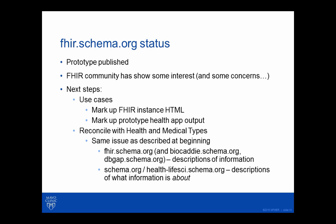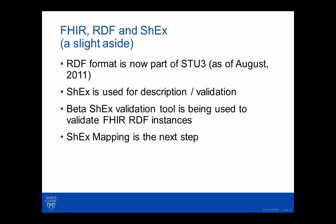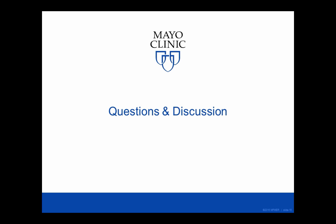We're also looking at reconciling with the health and medical types and with other material coming out of BioCADDI. As an aside, we've been working with the FHIR community to produce an RDF representation, and as of the latest ballot, there are now three standard exchange formats for clinical data using FHIR: XML, JSON, and RDF. The shape expressions language is being used for description and validation, and starting to work on mapping tools is the next step.